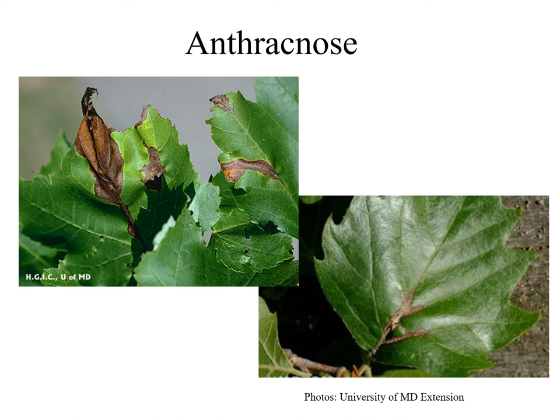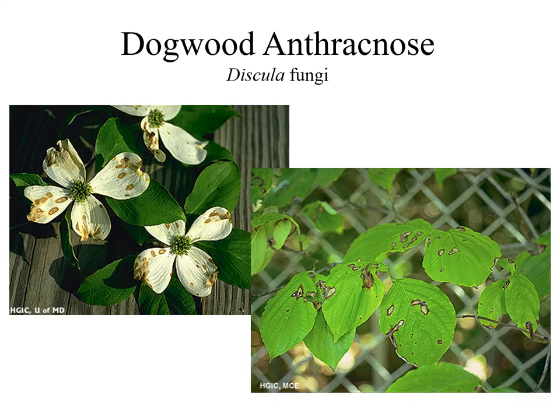Symptoms moving from the bottom of the tree upward are typical of anthracnose. Discula anthracnose, or dogwood anthracnose, is a serious disease which can kill flowering dogwood trees. It is caused by a fungus. Early in the spring, anthracnose fungi may kill twigs and newly expanding leaves, causing symptoms that resemble frost injury. Small sunken dead areas, otherwise known as cankers, can girdle the branches. Infections of the leaves can cause dead blotches along leaf veins and sometimes distortion. Infected leaves may drop from the tree, causing defoliation.